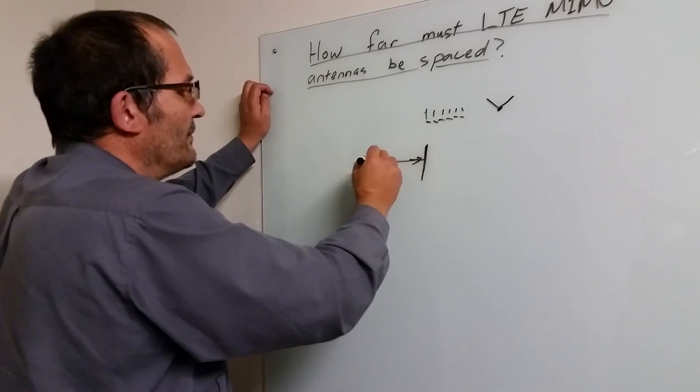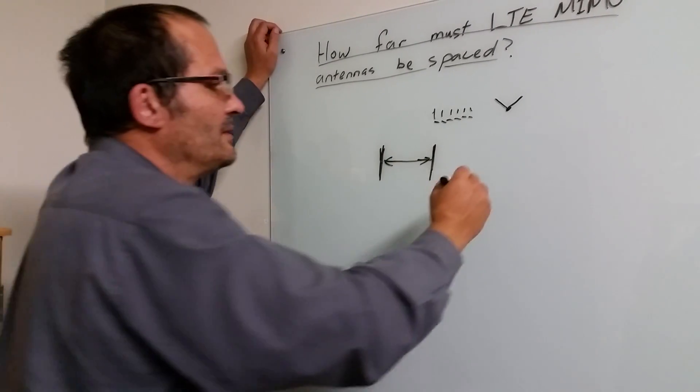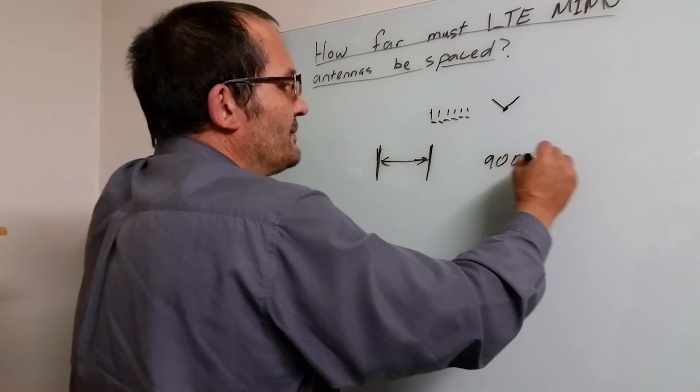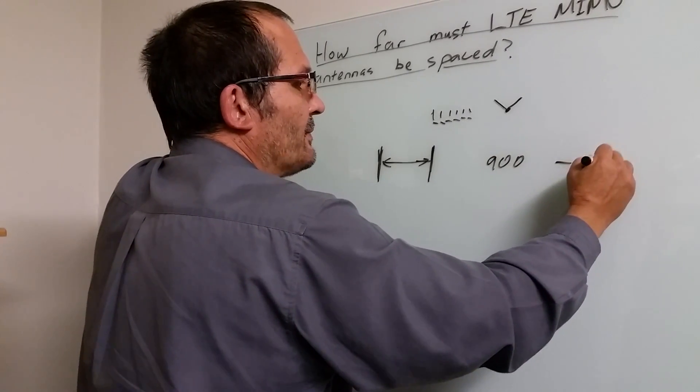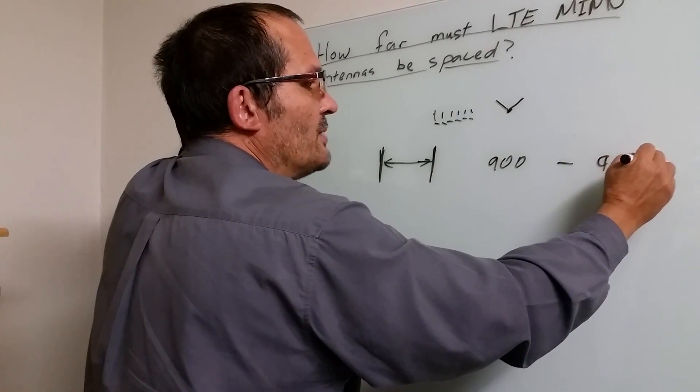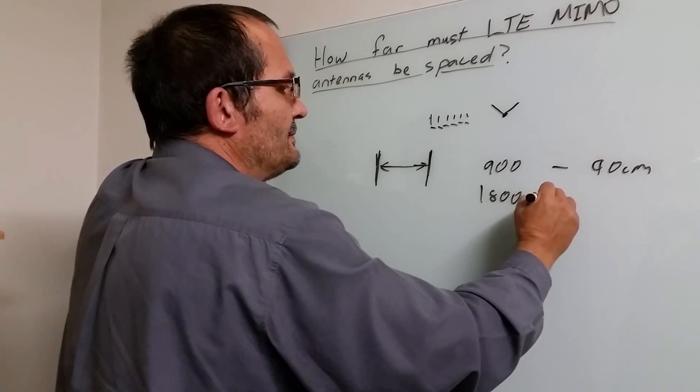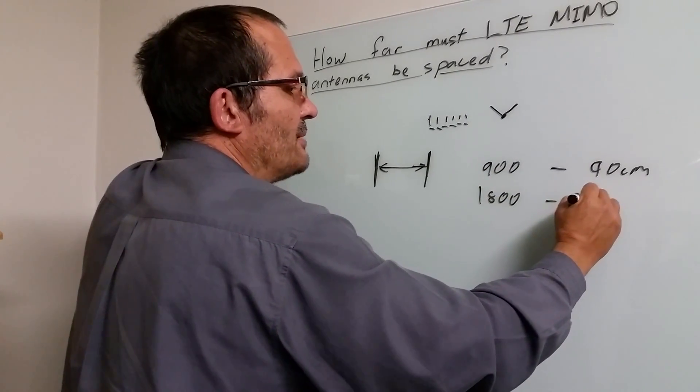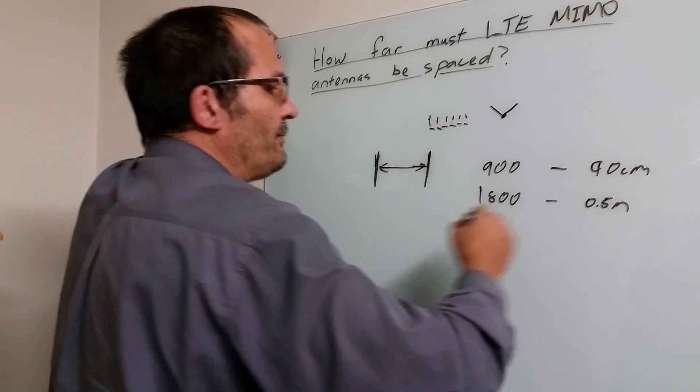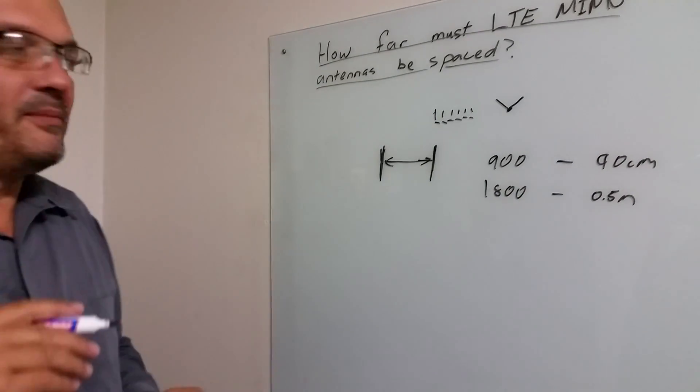And that spacing, if I give you a very simple rule: at 900 megahertz, should be 90 centimeters, almost a meter. At 1800, half of that, about 0.5 meters, and I would say 0.5 meters is where you should stay.